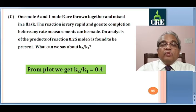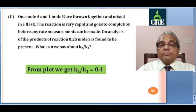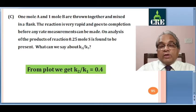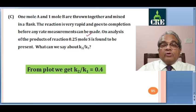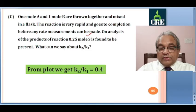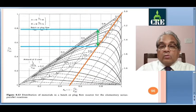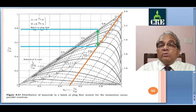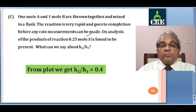Part C: 1 mole of A and 1 mole of B are equimolar and thrown together and mixed in a flask. The reaction is very rapid, going to completion before any rate measurement can be made. On analysis of the product, 0.25 moles of S is found to be present. Since CB by CA0 is 1 and reaction goes to completion immediately, this is on the line of slope 2 with delta CB by CA0 equal to 1.